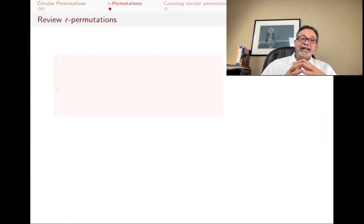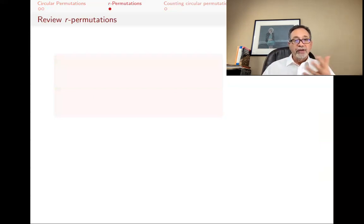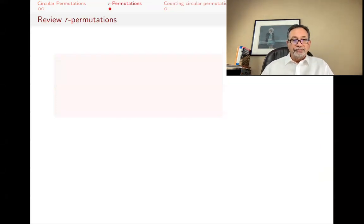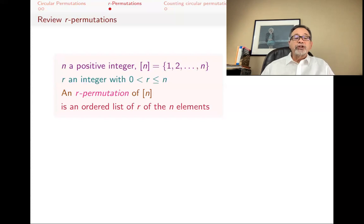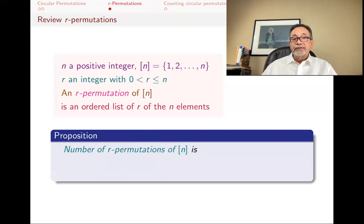Now we want to consider circular R-permutations. Before that, I'll review what R-permutations — non-circular ones — are; this was the subject of a previous video. Bracket N is 1 through N. R is a positive integer less than or equal to N. Then an R-permutation of bracket N is just an ordered list of R of the N elements: you pick R of the N elements, put them in order, and you've got yourself an R-permutation.